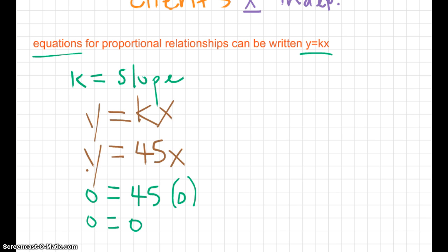Or we could also, let's say we wanted to find out what our Y is. Y equals, let's put in 45 for K times, let's put in 2 for X. So when X is 2, what is Y? Y was 90. For two clients, he made $90. So your equation can be written as Y equals 45X.